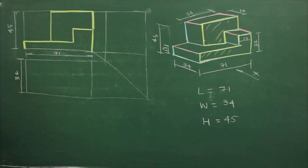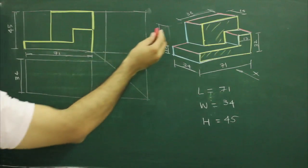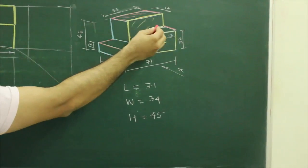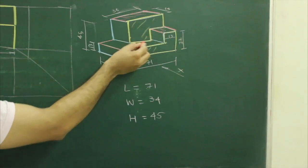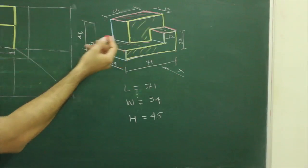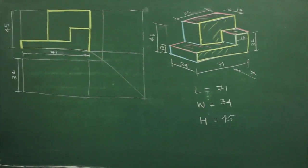After that, to draw top view, when you see from the top, you will see this block, that is first block. Then you will see second block and you will see third block. So first we will draw first block.